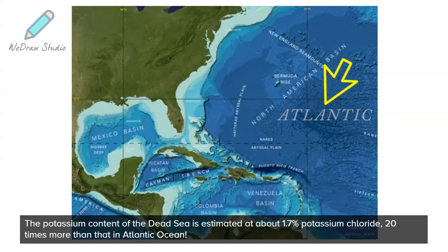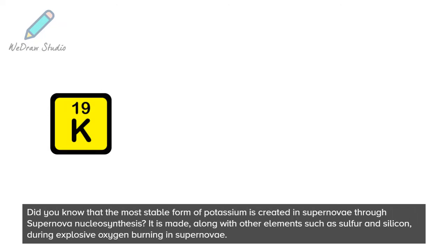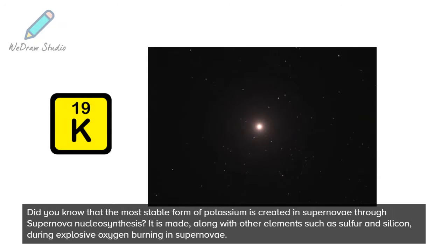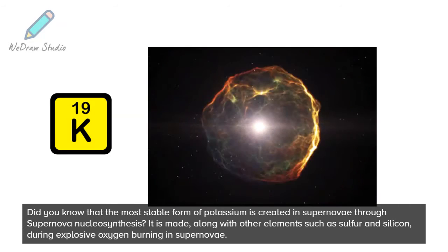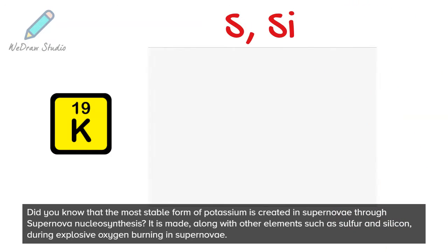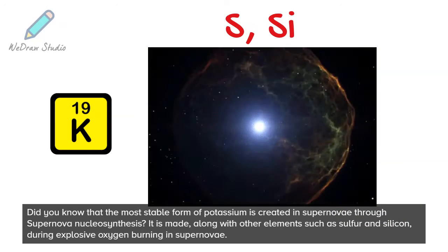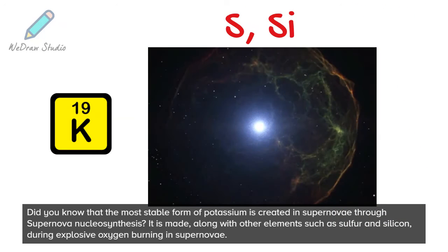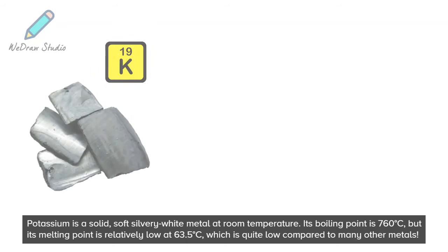Did you know that the most stable form of potassium is created in supernovae through supernova nucleosynthesis? It is made along with other elements such as sulfur and silicon during explosive oxygen burning in supernovae.